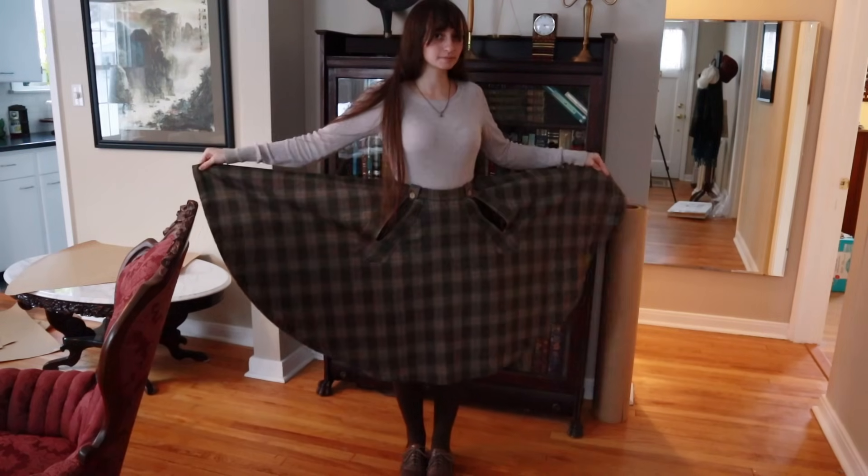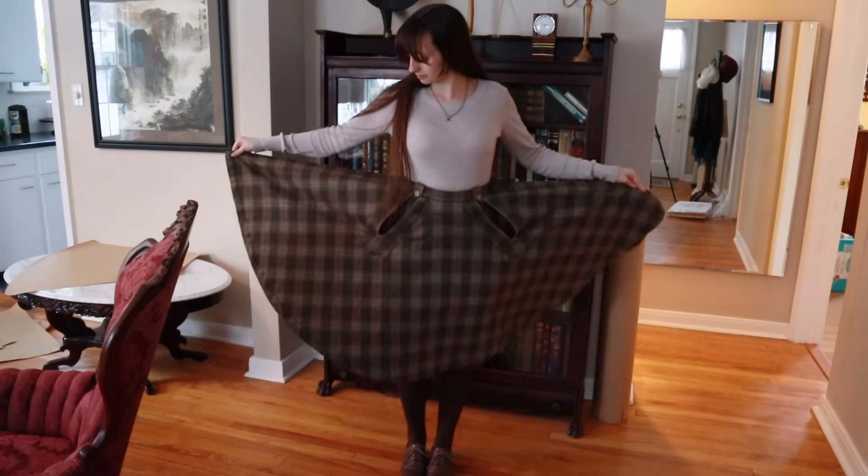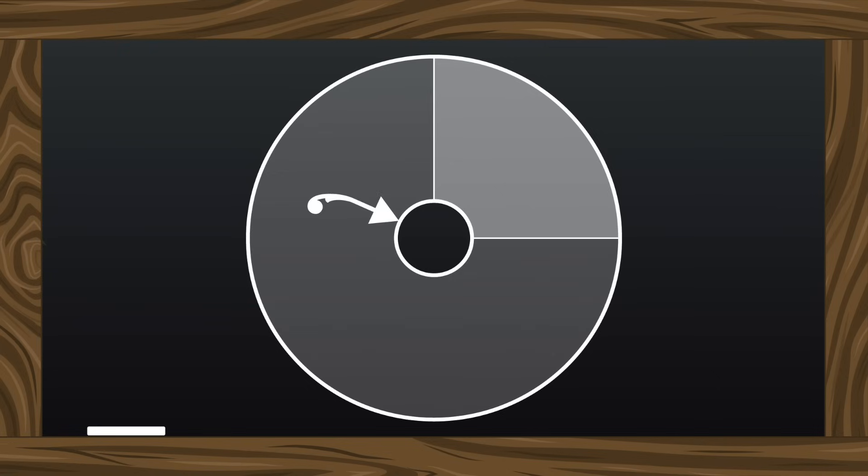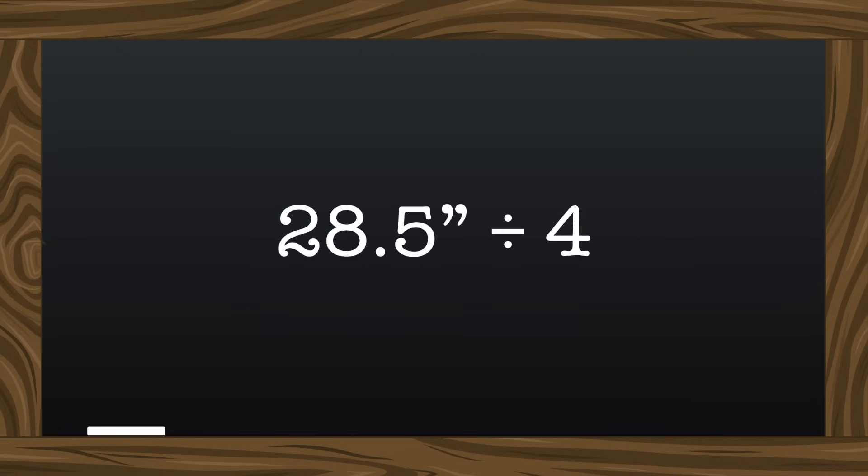For our first pattern, let's start with the simplest, which is a full circle skirt with a fitted waist. Now I'm only going to be patterning a quarter of the skirt. So for my fitted skirt, this inner circle circumference needs to equal 28.5 inches, which means that for a quarter of the skirt, it needs to equal one fourth of that.